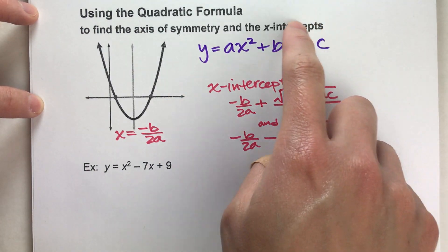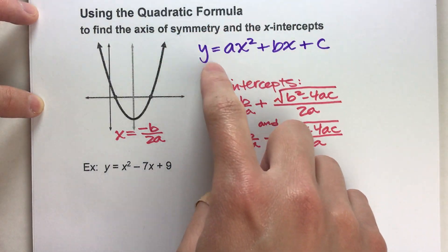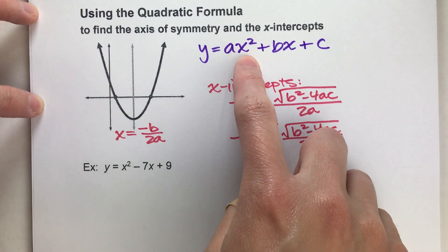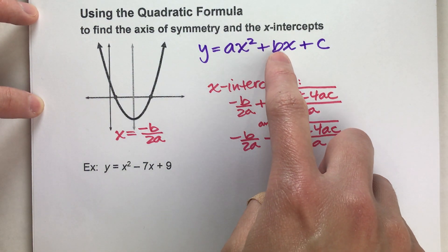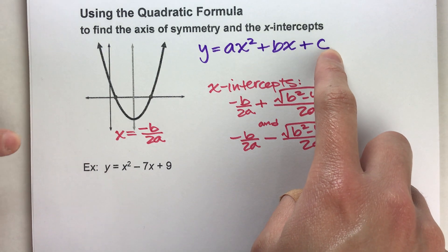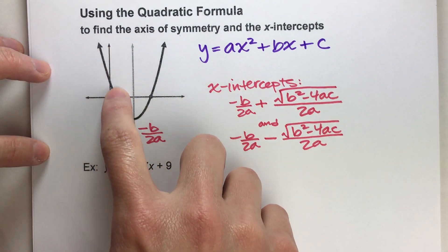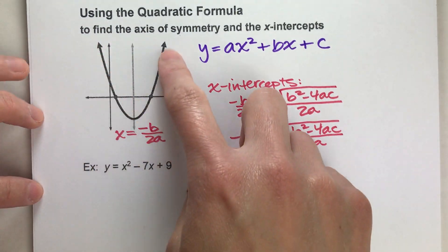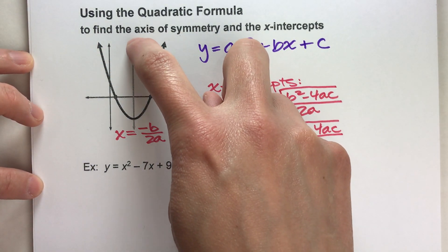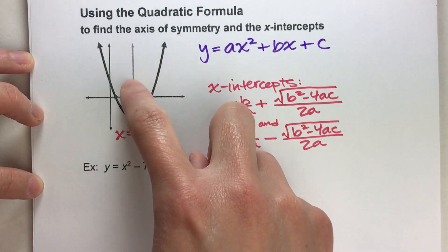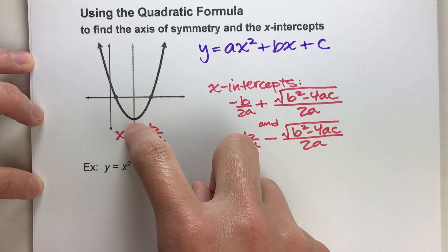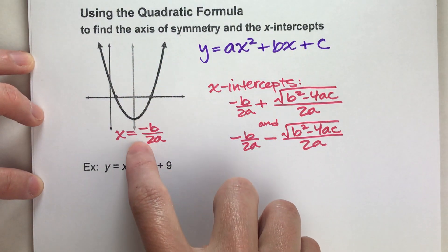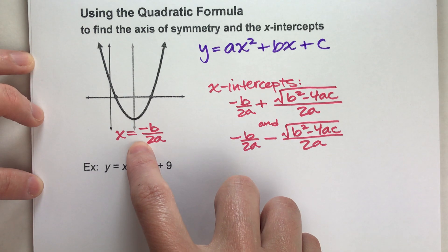Here's the generic equation for a parabola in standard form: y equals ax squared plus bx plus c. If you understand what the shape of a parabola looks like, you remember it's symmetrical. And this line that cuts the parabola into two symmetrical parts is your axis of symmetry, and that's one of the things we're trying to find.